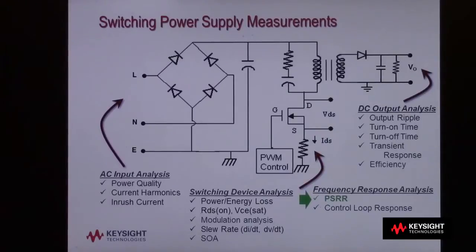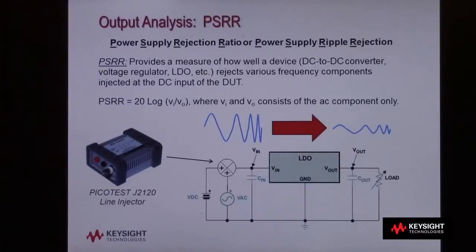This particular measurement is often abbreviated as a PSRR measurement. Let's first define what a PSRR measurement is. A PSRR test provides a measure of how well a power delivery device, such as a linear regulator or a low-voltage dropout regulator, rejects various frequency components injected at the DC input of the device under test.